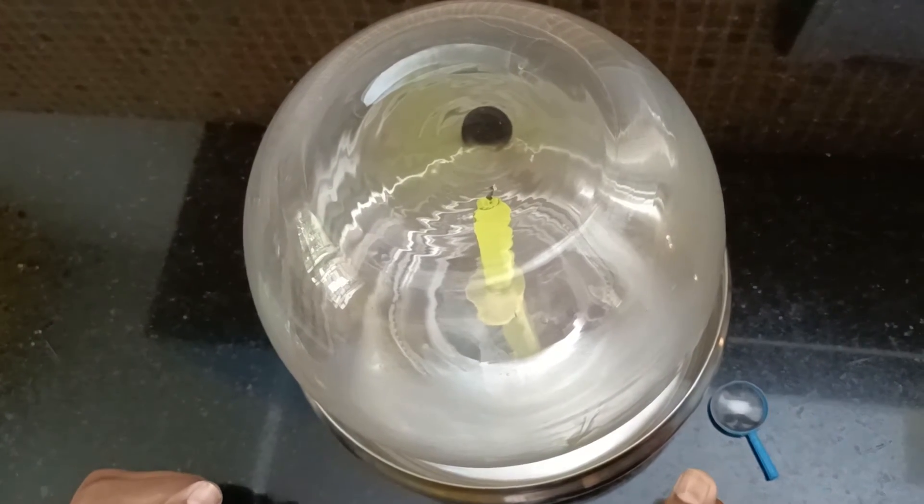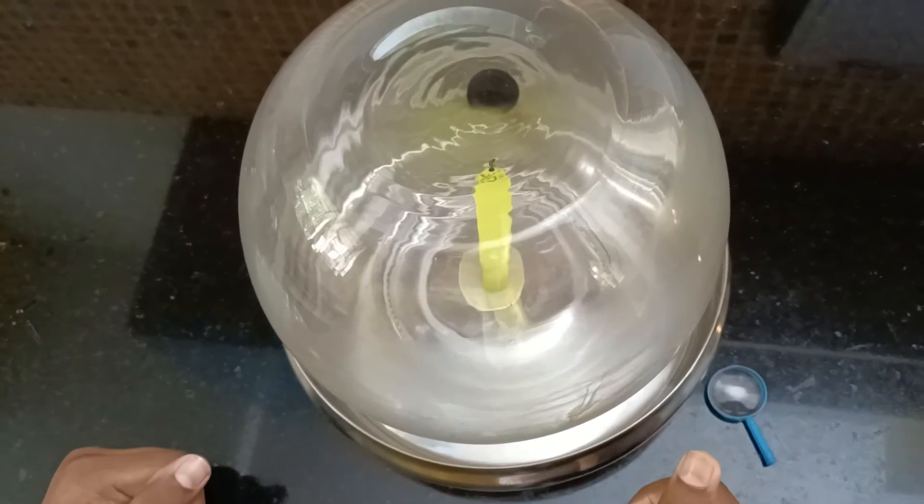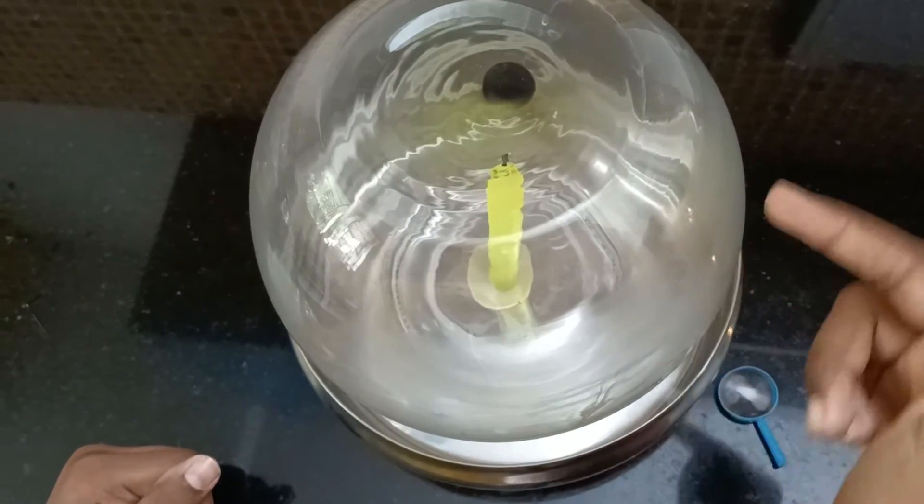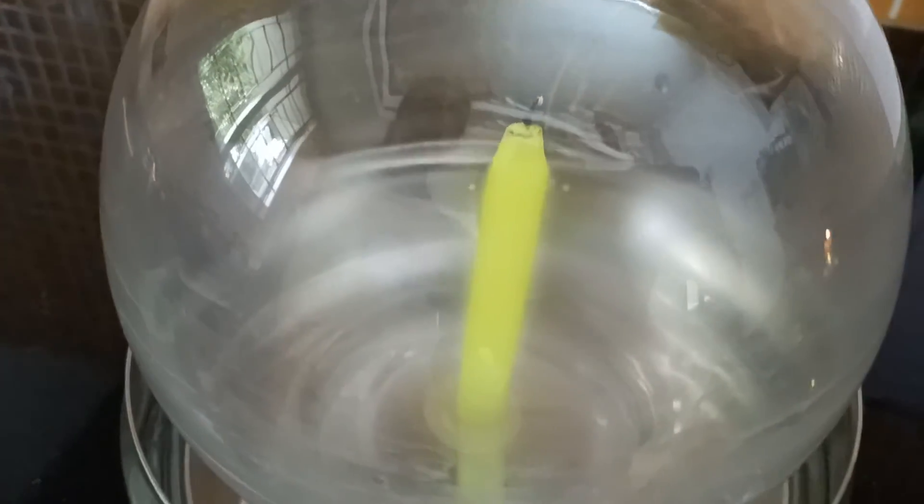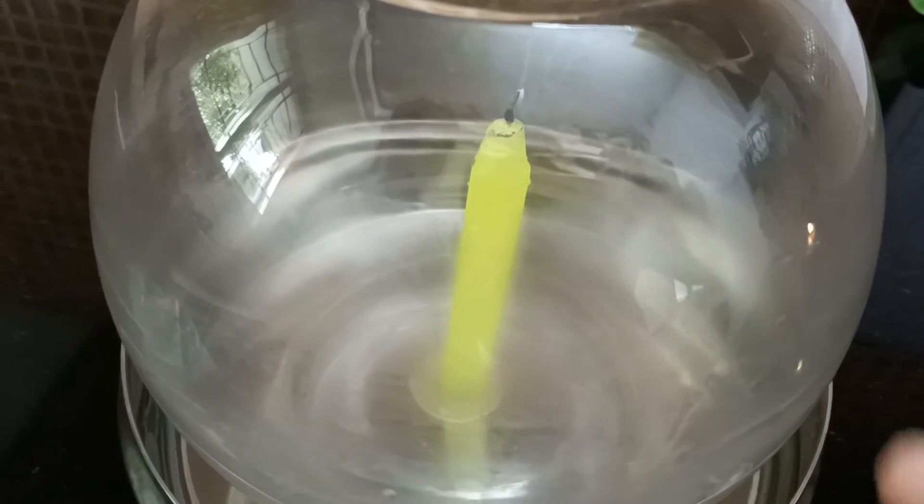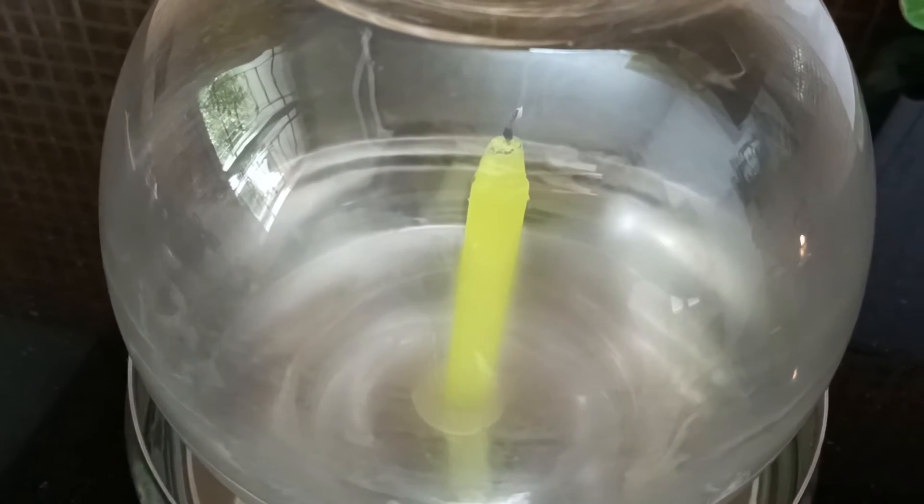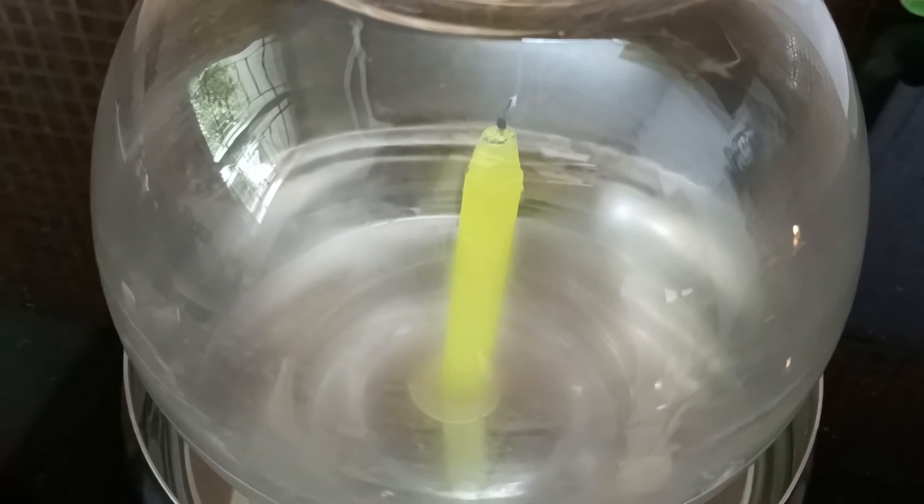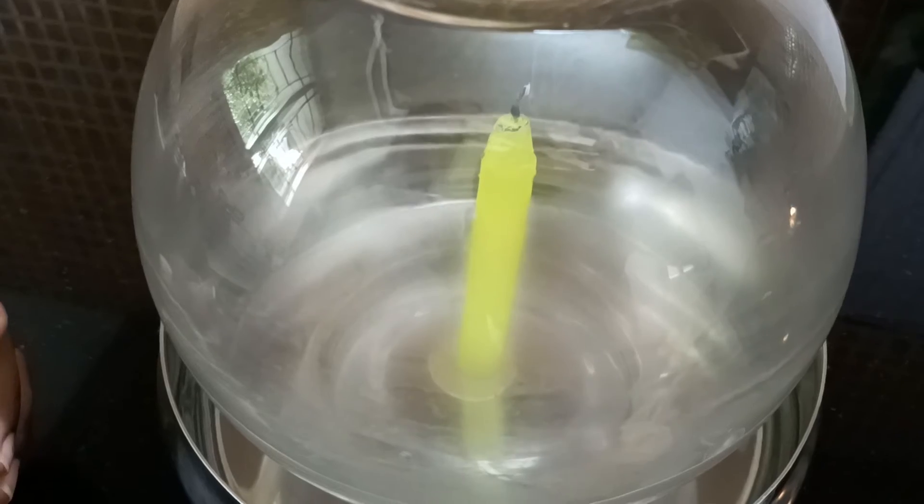It was clear that the oxygen in the air was being used for burning and being converted into carbon dioxide. Once the oxygen was completely used by the burning flame and converted into carbon dioxide, the flame went out. During burning, O2 is converted into CO2.